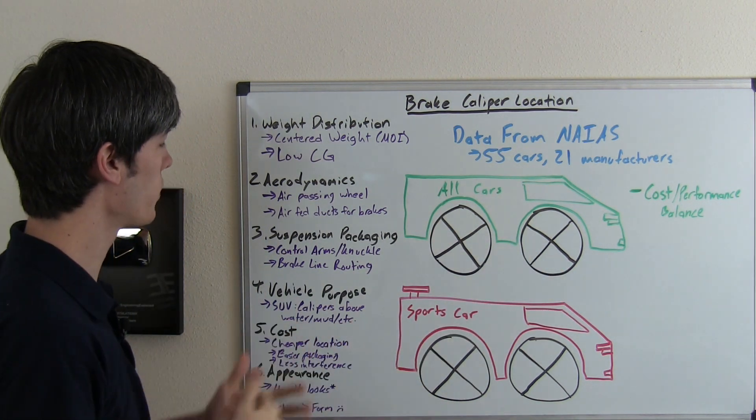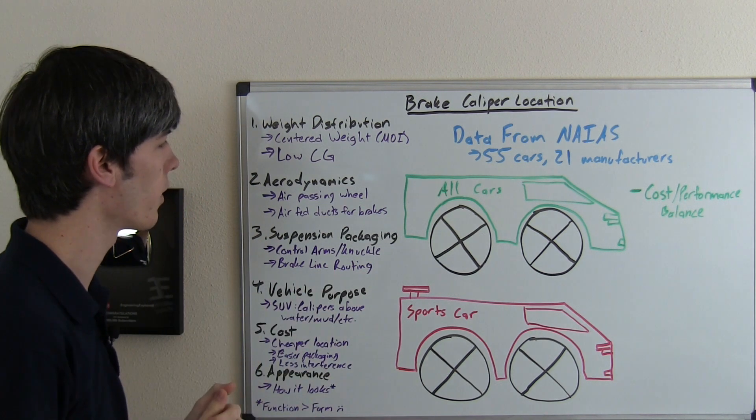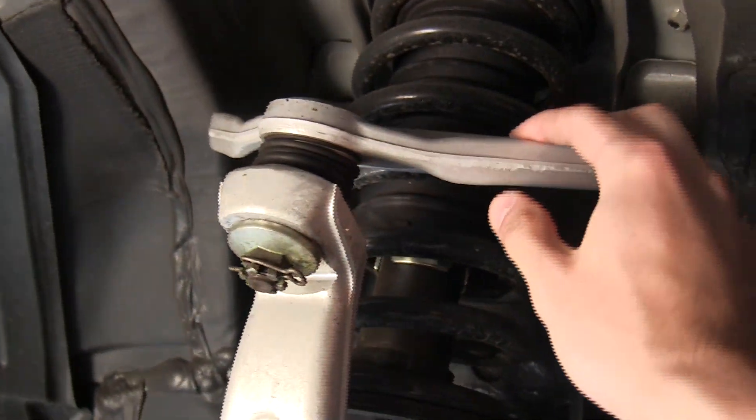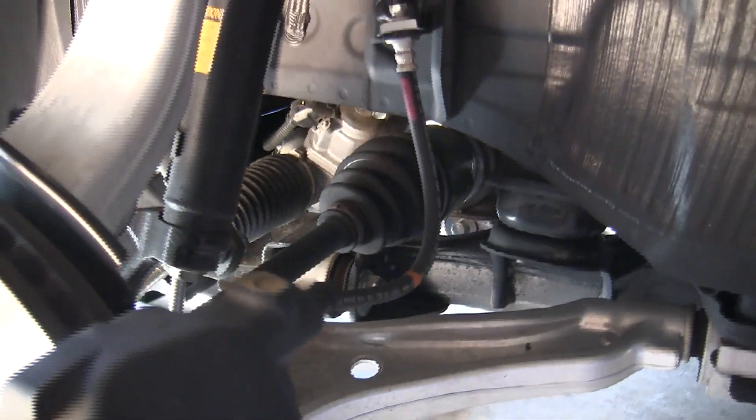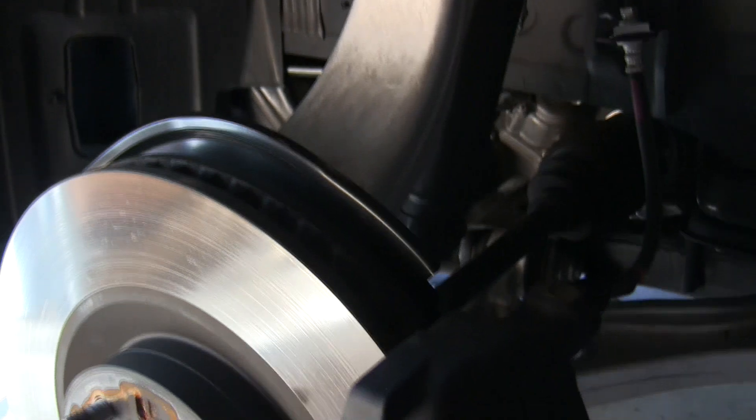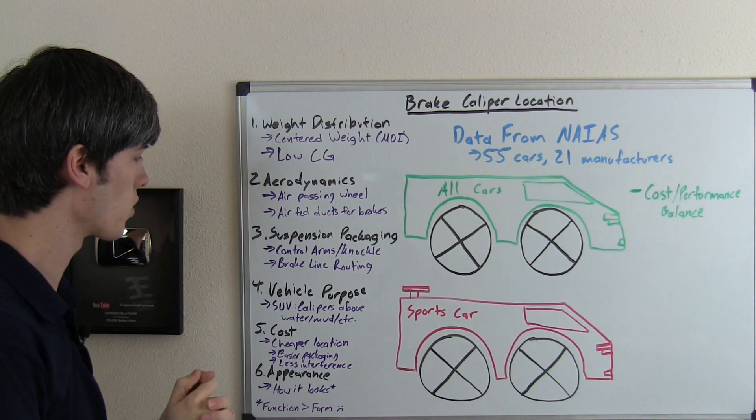Another factor could be suspension packaging. So for example if you had an upper control arm that was placed right here and you would have an interference if you had your brake caliper placed there, well then obviously you can't place the brake caliper there and you'll have to place it in another location.